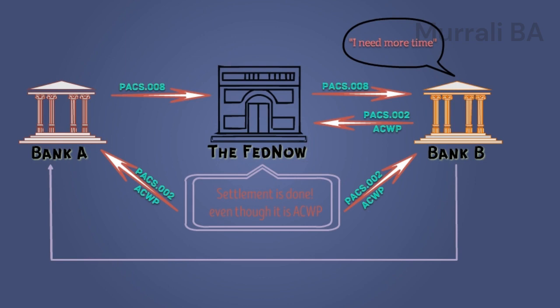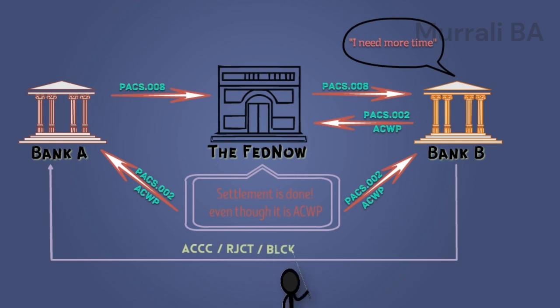It is Bank B's responsibility to send the final status for this payment. They can send the following statuses once investigation is completed: ACCC if the payment request did not have any fault and they accepted the payment and credited the customer; RJCT if the payment request did not pass any of Bank B's validation or investigation; BLCK if the payment request failed any compliance checks during investigation; PDNG if Bank B needs more time for investigation. All of these statuses are communicated using PACS 002 Payment Status Report via the FedNow service.